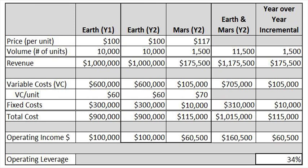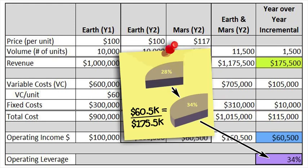Applying VAVE reduces the variable costs on our Mars shipment from $77 per unit to $70 per unit, incremental variable costs to $105,000, and total incremental costs to $115,000, improving operating leverage to 34%.